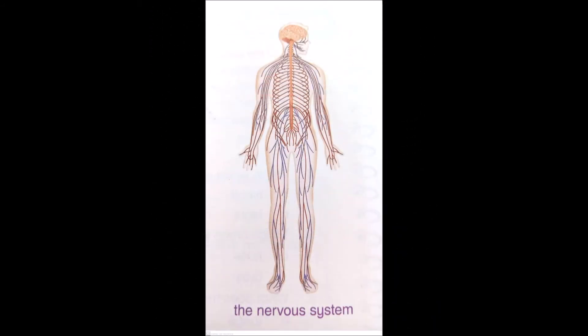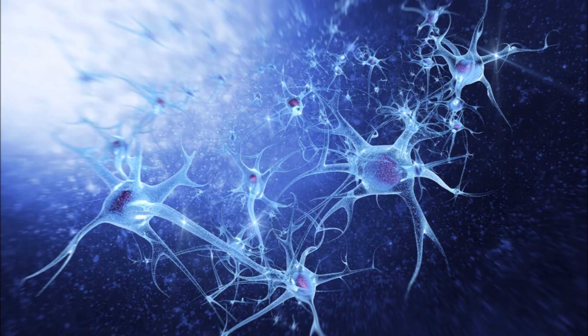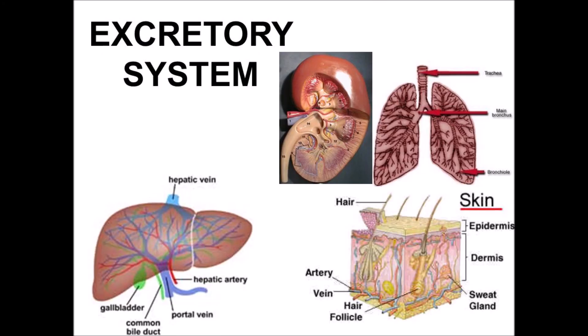The next topic is the nervous system. The brain is the main part of the nervous system that sends and receives signals from sense organs through nerves. Nerves are like bundles of fibers that transmit signals between the brain and body parts. There are nerve cells in nerves which carry these signals.